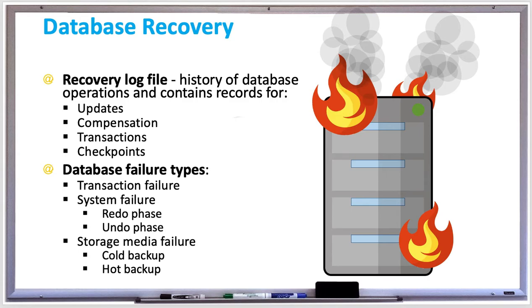Recovery from a system failure has two phases: the redo phase, which restores transactions that were committed or rolled back since the last checkpoint, and the undo phase, which reads the recovery log in reverse and figures out how to undo any issues and recover the database.